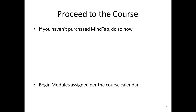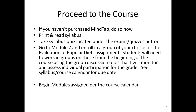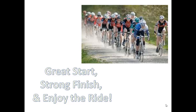So the next things you need to do: if you haven't purchased MindTap, do so. Print and read your syllabus and take the syllabus quiz. Then go to Module 7 and enroll in a group of your choice for the Evaluation of Popular Diets assignment. You're going to need to work in groups from the very beginning of the course using the group discussion tools and grading rubric. There is a syllabus course calendar due date for this assignment and a YouTube video and PowerPoint showing you exactly how to complete it. Post an introduction of yourself on the discussion board and begin the module assigned on the course calendar. Here's to a great start and a strong finish — please reach out with any questions.